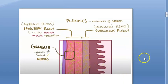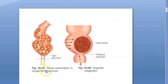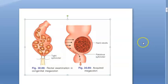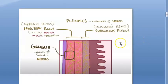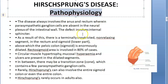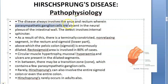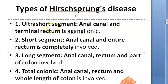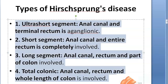Because the nerve plexuses are absent, fecal matter cannot get out, causing megacolon. This is a congenital condition — the baby will not pass stools. The pathophysiology: parasympathetic ganglion cells are absent in the neural plexus of the intestinal wall.